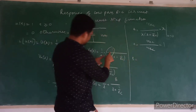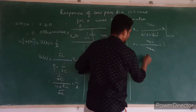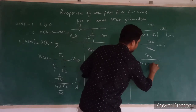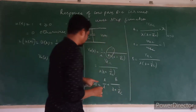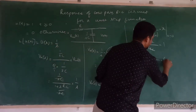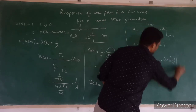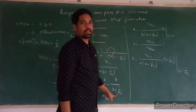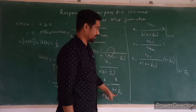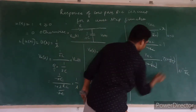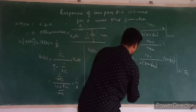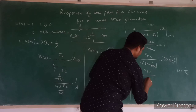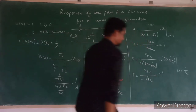For B, we go back to the expression with 1 upon RC in the numerator and s times s plus 1 upon RC in the denominator. The residue of B is found by cancelling the s plus 1 upon RC term and substituting s equals minus 1 upon RC. This gives B equal to minus 1.